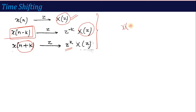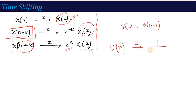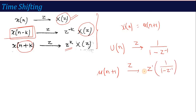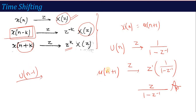If shifting is done by n+k, then the Z-transform is z^(+k) * X(z). This is the shifting property. A simple example: suppose you need to calculate x(n) = u(n+1). Now if I use the basic formula, I calculate the limit and apply the formula to get the result. But using the property: the basic is u(n), whose Z-transform is 1/(1 - z^(-1)). Now u(n+1) means shifting by +1, so the Z-transform is z^1 * 1/(1 - z^(-1)) = z/(1 - z^(-1)). Similarly, u(n-1) gives z^(-1)/(1 - z^(-1)).